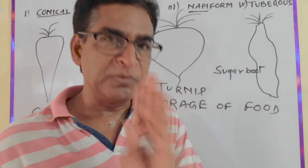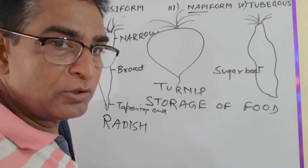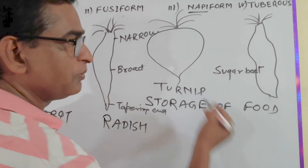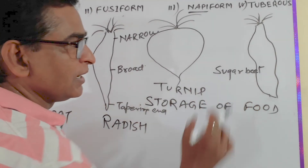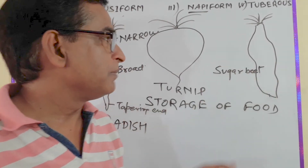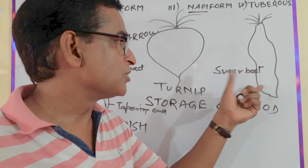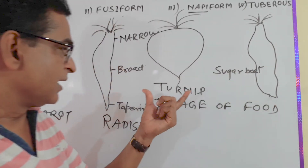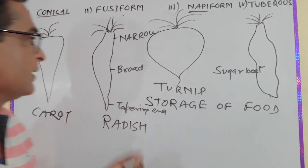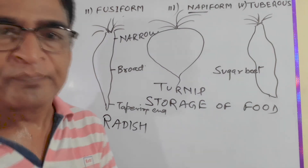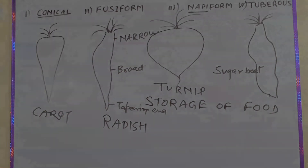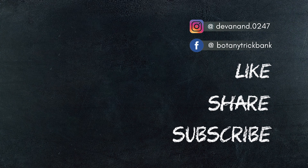You have to remember the names of the plants, and if you can remember the botanical names, that will be very good because sometimes in examinations they may ask. Sugar beet is Beta vulgaris. Turnip is Brassica rapa. Radish is Raphanus sativus. And carrot is Daucus carota.